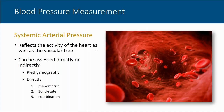In measurements of systemic arterial pressure, we're really measuring a pulse waveform that reflects the activity of the heart as well as the status and state of the vascular tree. We can measure systemic arterial pressure either directly or indirectly. We can use plethysmography — essentially the technique used clinically when we have a blood pressure cuff placed on our arm — or we can measure blood pressure directly using a catheter fluid-filled system and blood pressure transducer, a solid-state blood pressure transducer, or a combination of techniques.